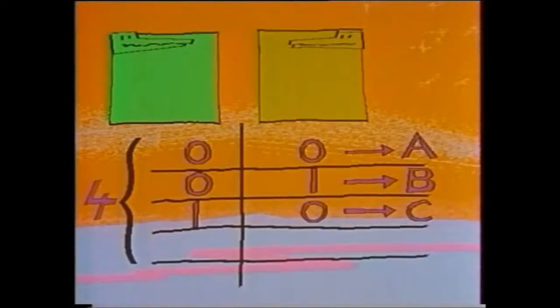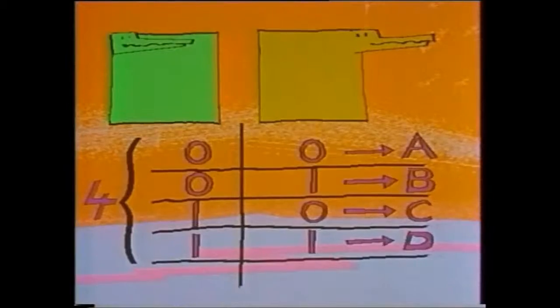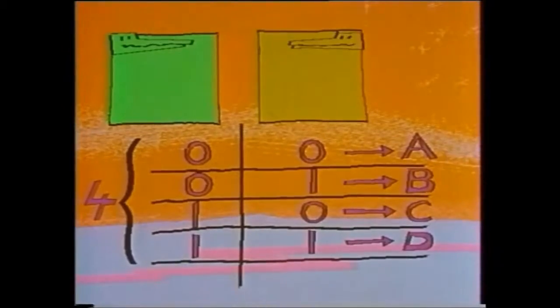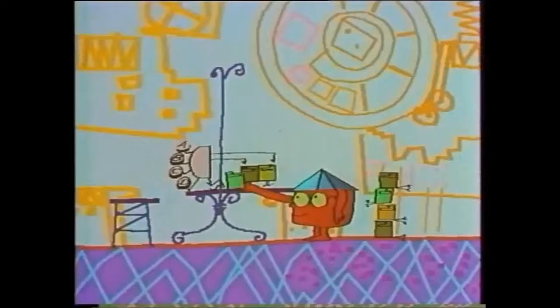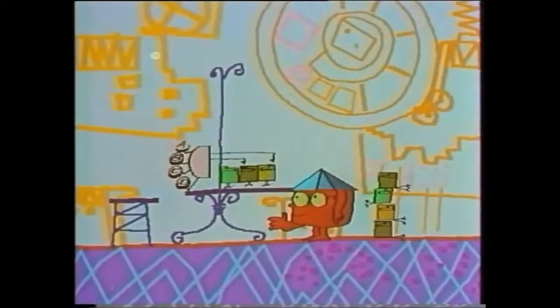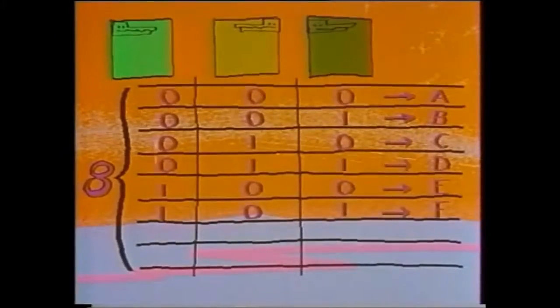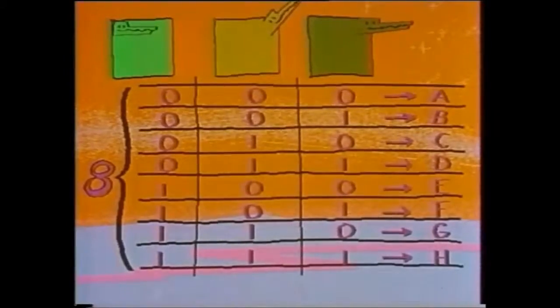With two squirks, we have four possible combinations of zero and one, which means that we can encode the first four letters of the alphabet. But let's add another squirk. There are now eight possible combinations, and we can thus encode eight different letters.